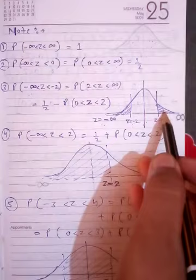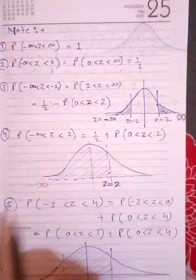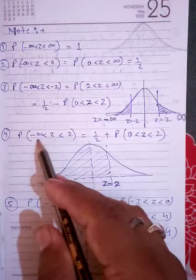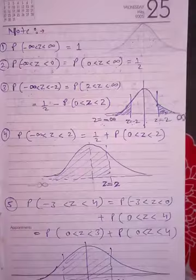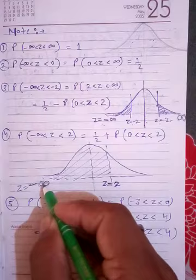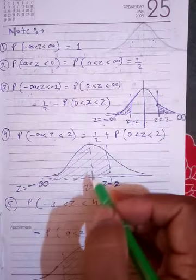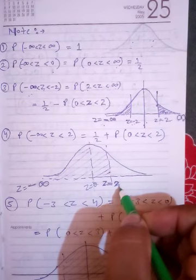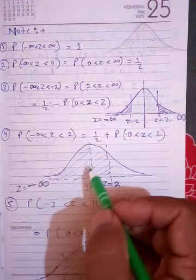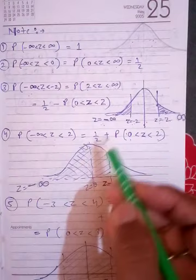Similarly, if you need probability that z lies between minus infinity and plus 2: you already know the area from minus infinity to 0 is 0.5, and the area from 0 to plus 2 can be found from the standard normal table. Add these two: 0.5 plus the table value for 0 to +2 gives the area from minus infinity to plus 2.